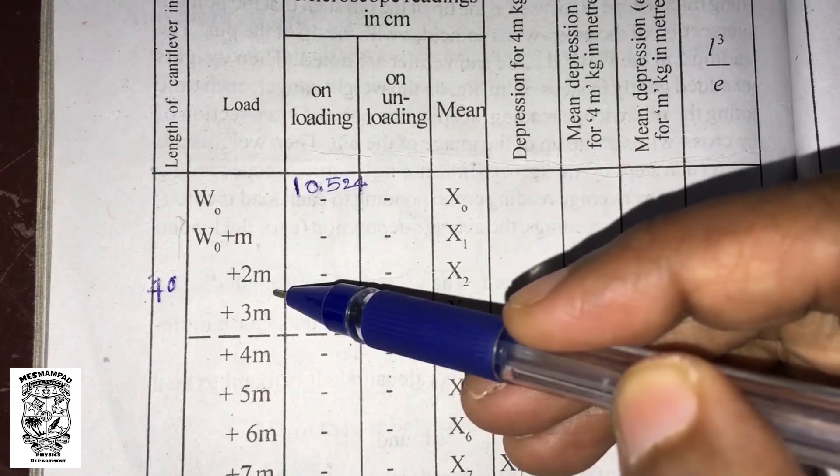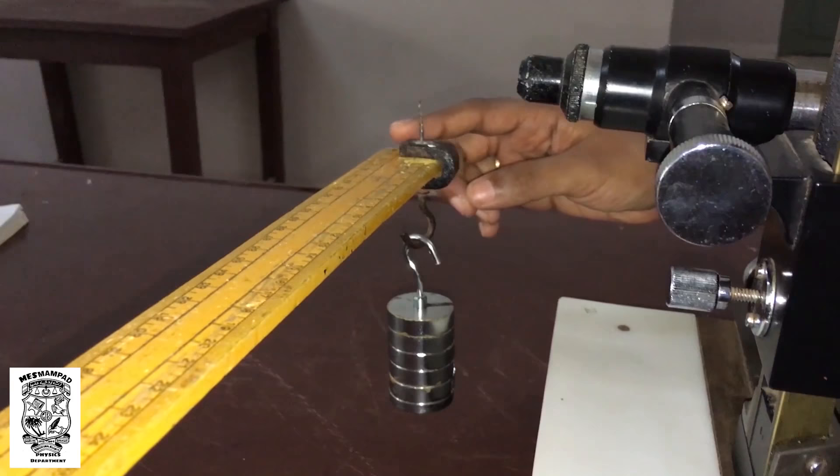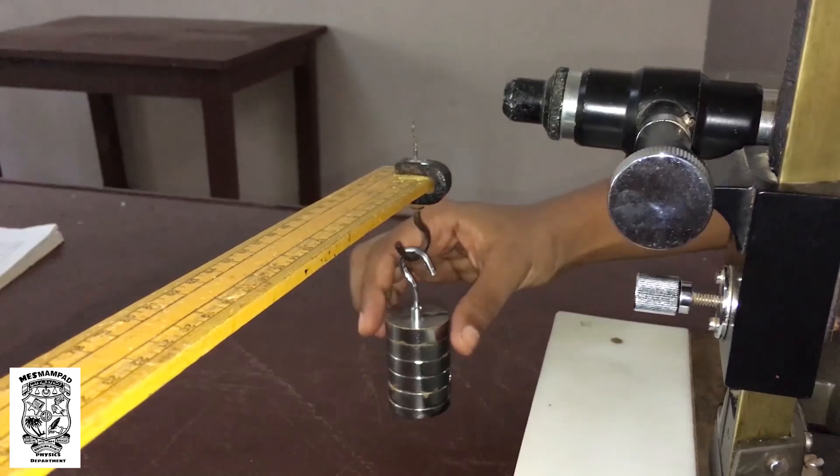W0 plus M, W0 plus 2M, 3M, 4M, 5M. We need to repeat the reading. We need to mark the loading and unloading so we will be able to record the readings. We will change the weight.